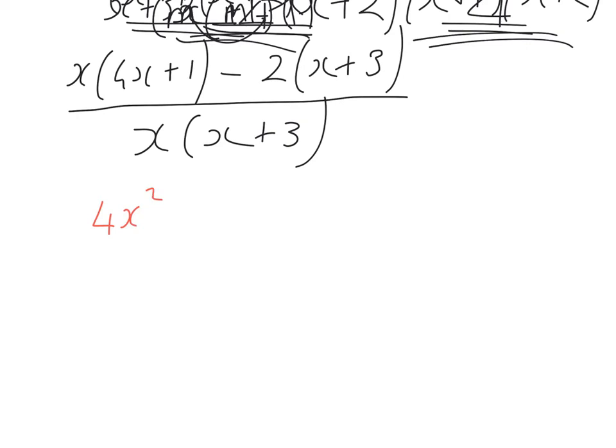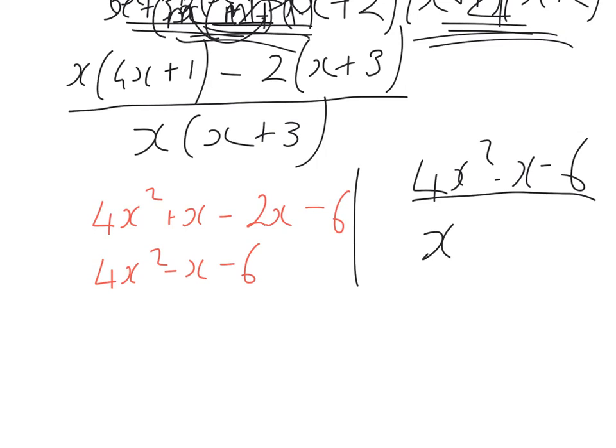So that would be 4x squared plus x minus 2x minus 6. Tidy this up and that'll be 4x squared minus 1x minus 6. Bring that back in and that's 4x squared minus x minus 6 over x bracket x plus 3.